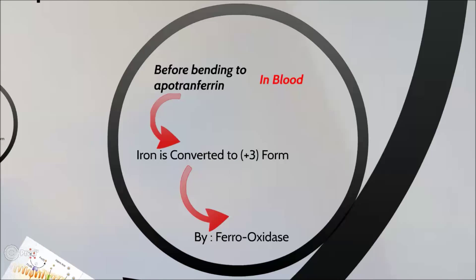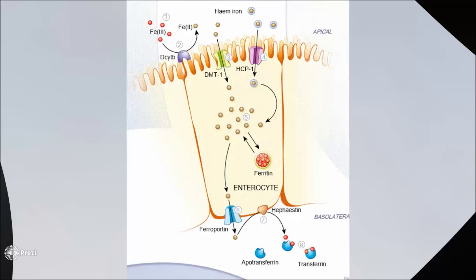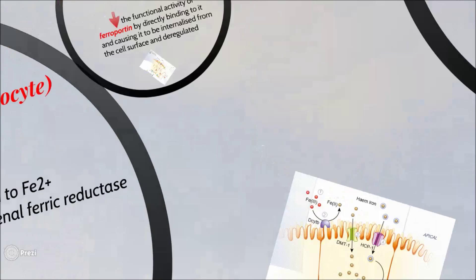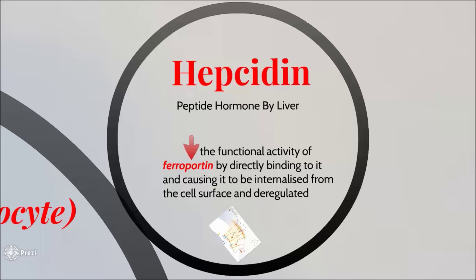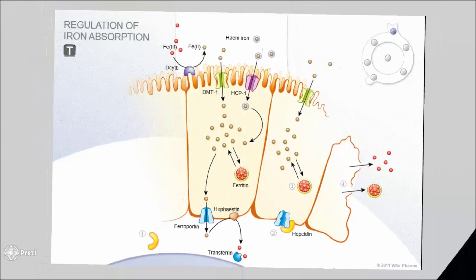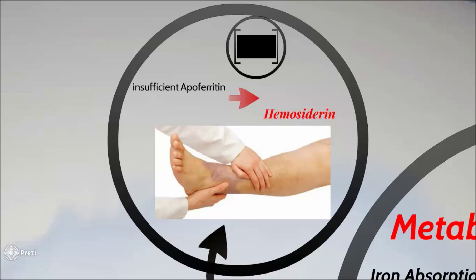In the blood, before iron binds to apotransferrin, it is converted into ferric form by ferrooxidase. Here is an image illustrating the whole mechanism of iron absorption. Now let's talk about the protein that regulates iron absorption, which is called hepcidin. Its functional activity is binding to ferroportin, causing it to regulate cell absorption of iron. An increase in iron absorption causes a pathological condition called hemochromatosis, shown in the image.